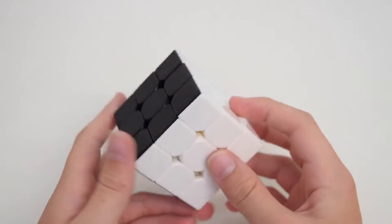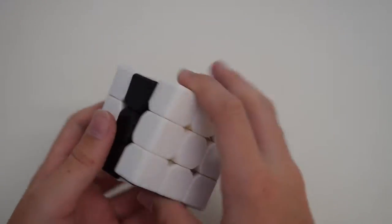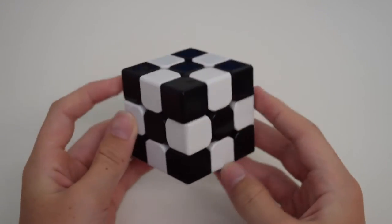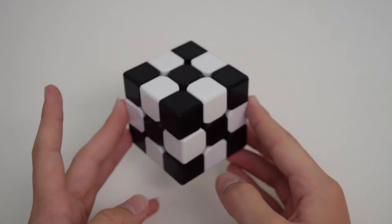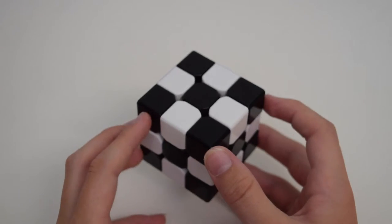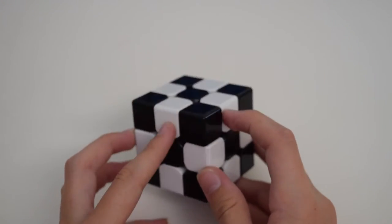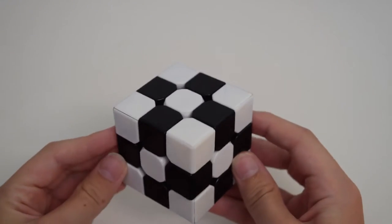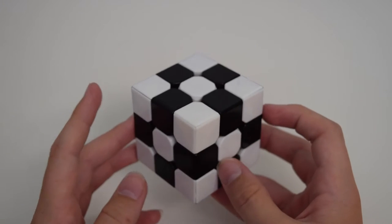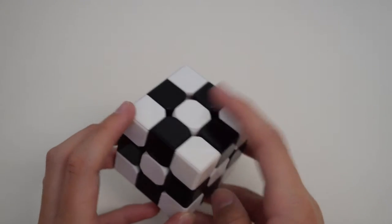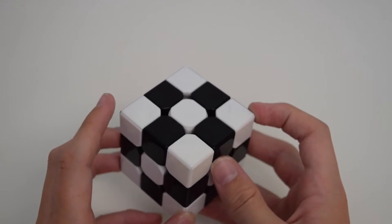If you didn't already know, if you checkerboard this pattern, this is the result you get. On one side, the corner pieces and center pieces are black, and the edge pieces are white. When you flip it to the other side, it's the complete opposite. The corner pieces and center pieces are now white, and the edge pieces are black.